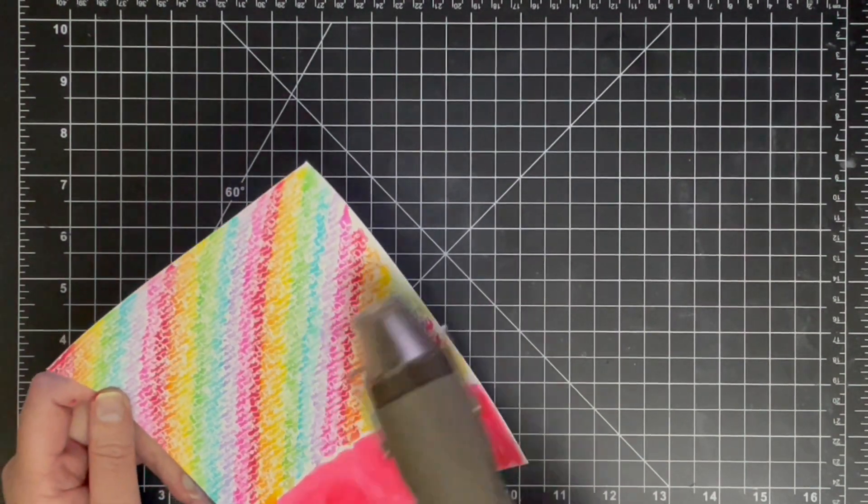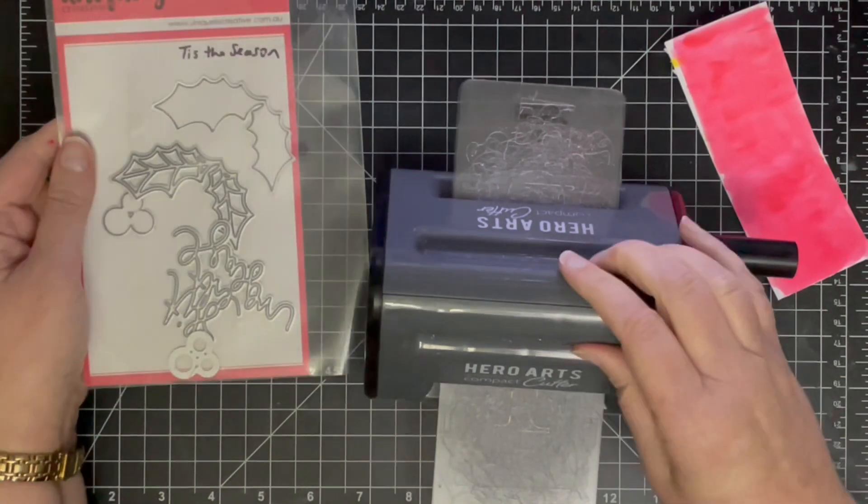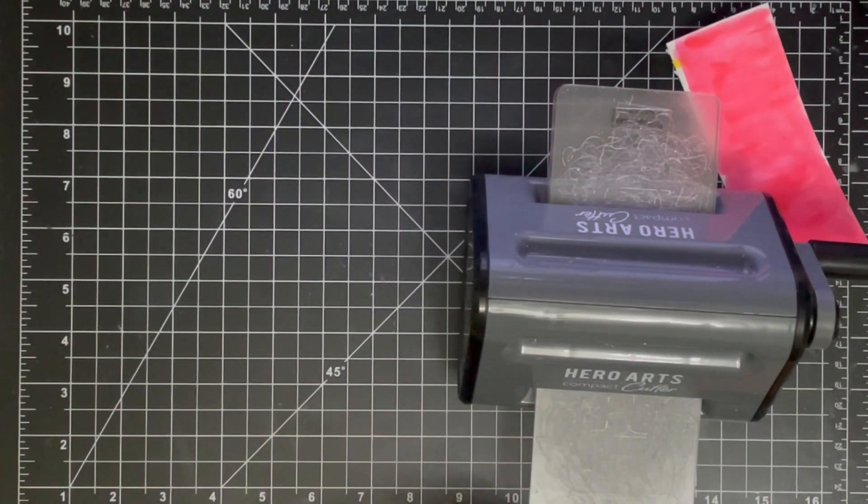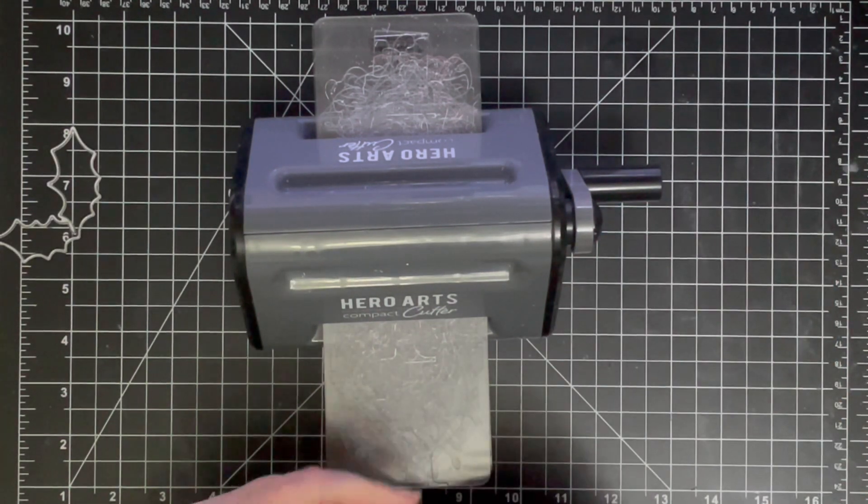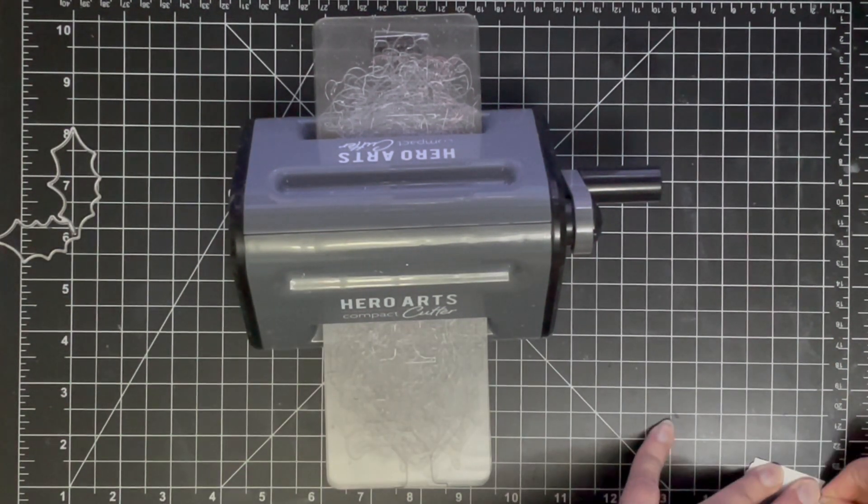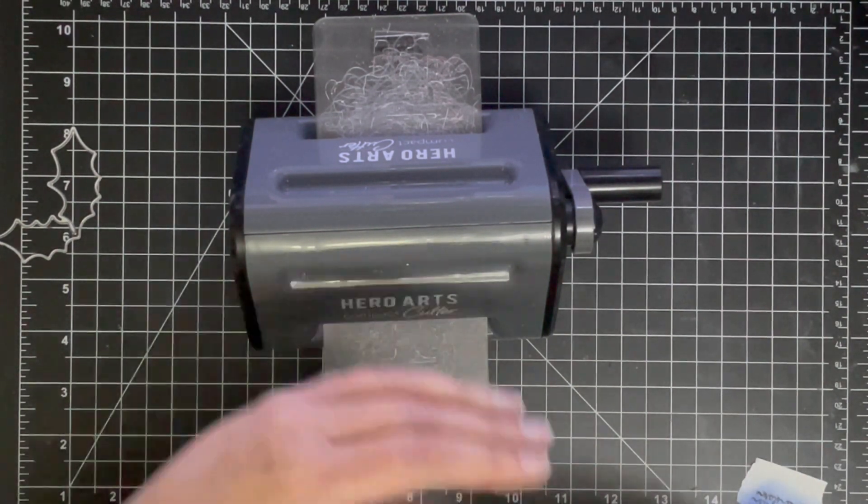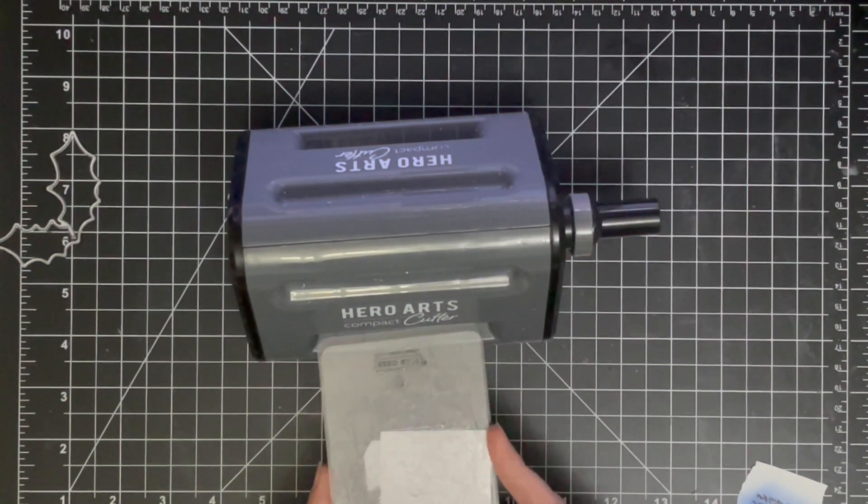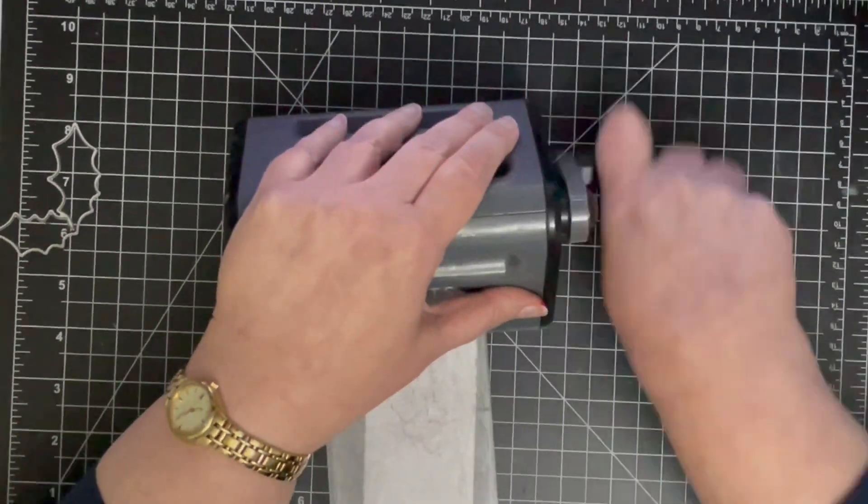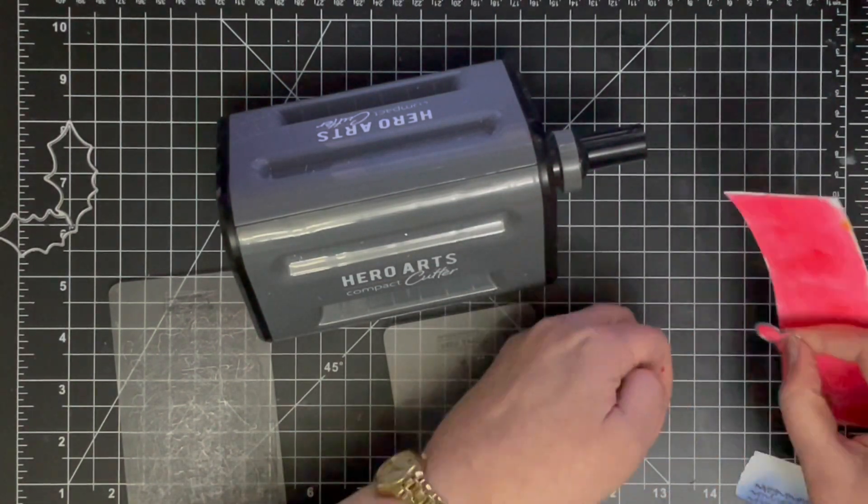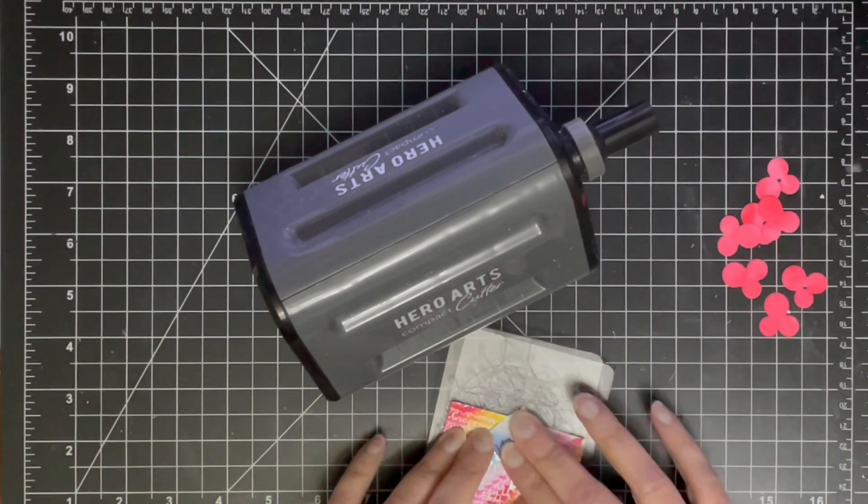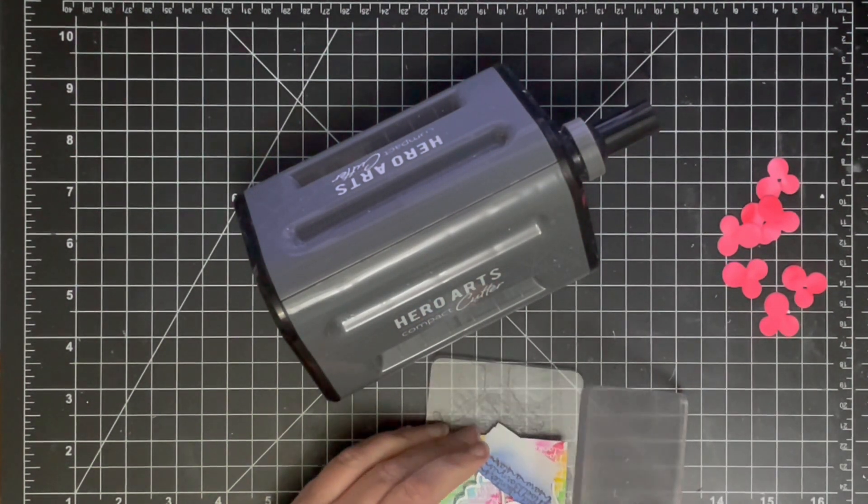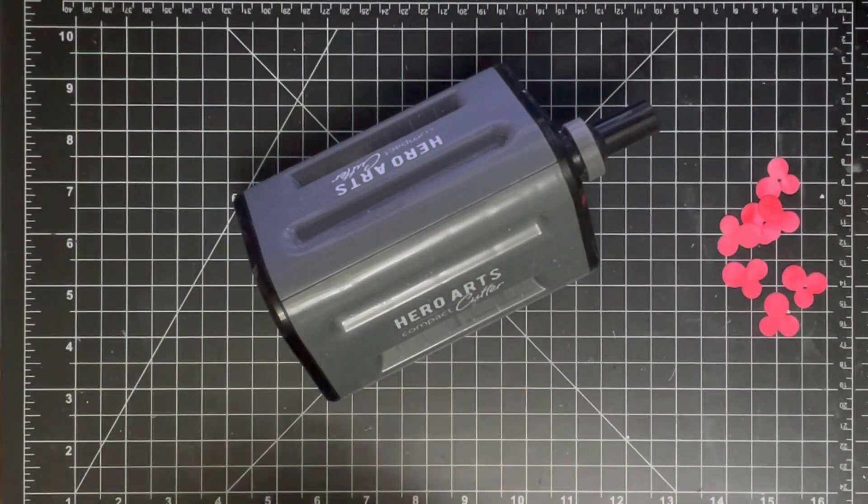So I'm now getting out these dies from Uniquely Creative. These are called Tis the Season, and I'm not going to be using the sentiment in this set, but I am going to be using the solid holly leaves and the outline holly leaves and the same with the holly berries, the solid and the outline. So I'm just going to be using my little compact cutter from Hero Arts here because these dies are pretty small and I can just do this really easily on my desktop without having to get out my bigger die cutting machine.